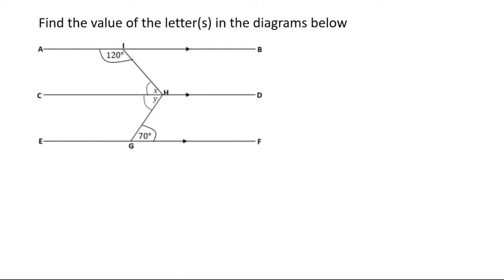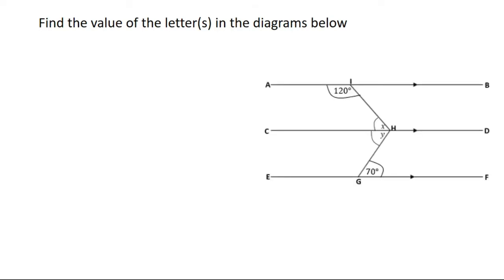We are going to find the value of X and Y in this diagram. I'm going to bring it here so that you'll be able to follow along. You can see that we have three parallel lines: AB, CD, and EF, and two transversals: IH and HG. Whenever you have this setup, you solve it one part at a time. When solving the top part, we consider it as if the bottom part is not there. We are going to consider AB and CD with IH as the transversal.